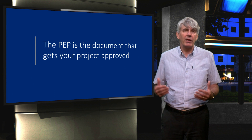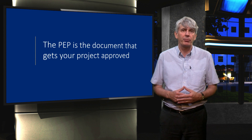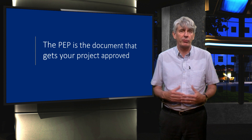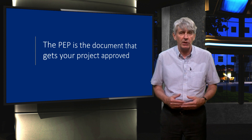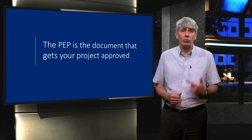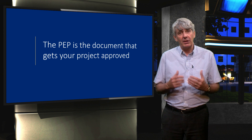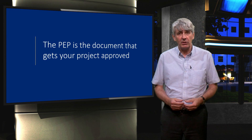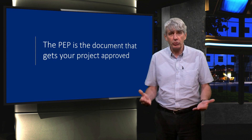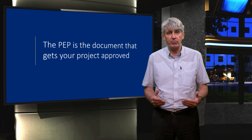The project execution plan is the document that gets your project approved by the executive board of your company. So it better be good, sharp, short, interesting, to the point and usable during the execution of the project.